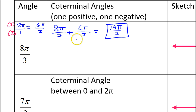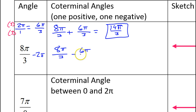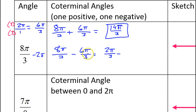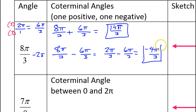Now let's find a negative coterminal angle. I'm going to do 8 pi over 3 minus 2 pi — that is, 8 pi over 3 minus 6 pi over 3 — which gives me 2 pi over 3. Now, that's another positive coterminal angle. I'm still shooting for a negative, so I'm going to subtract another 2 pi, subtracting 6 pi over 3 again, and this time I get negative 4 pi over 3. There's my negative coterminal angle.